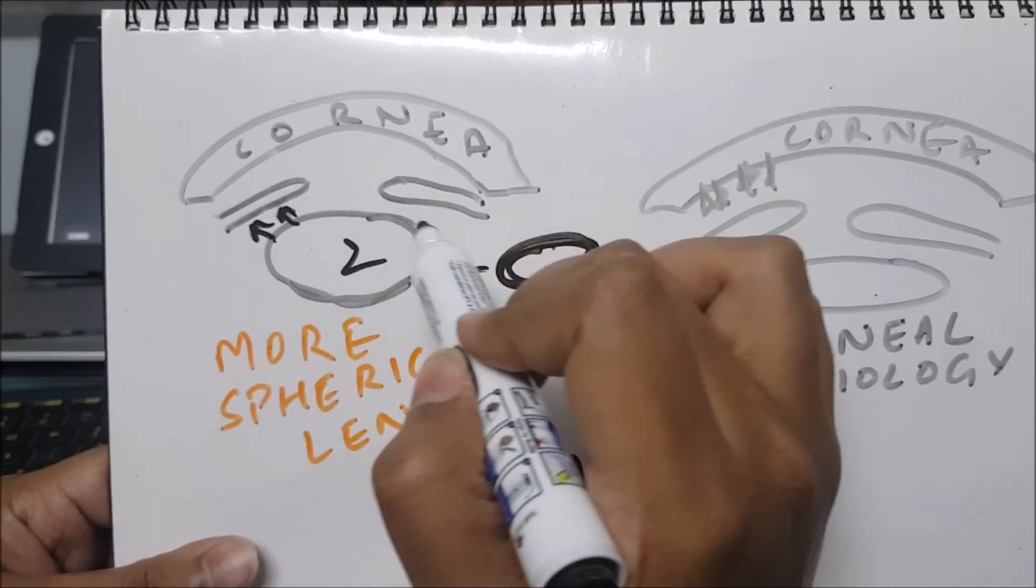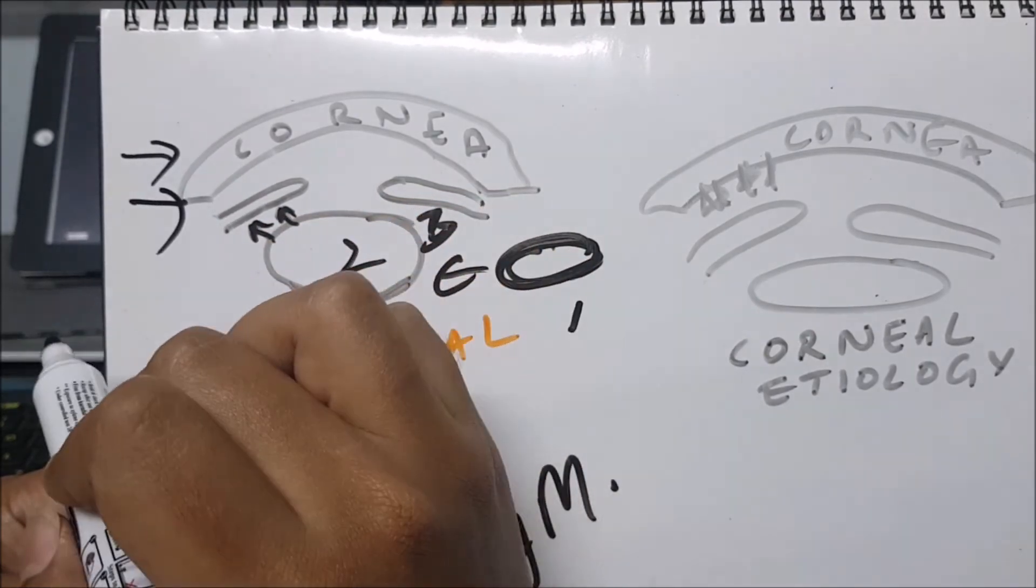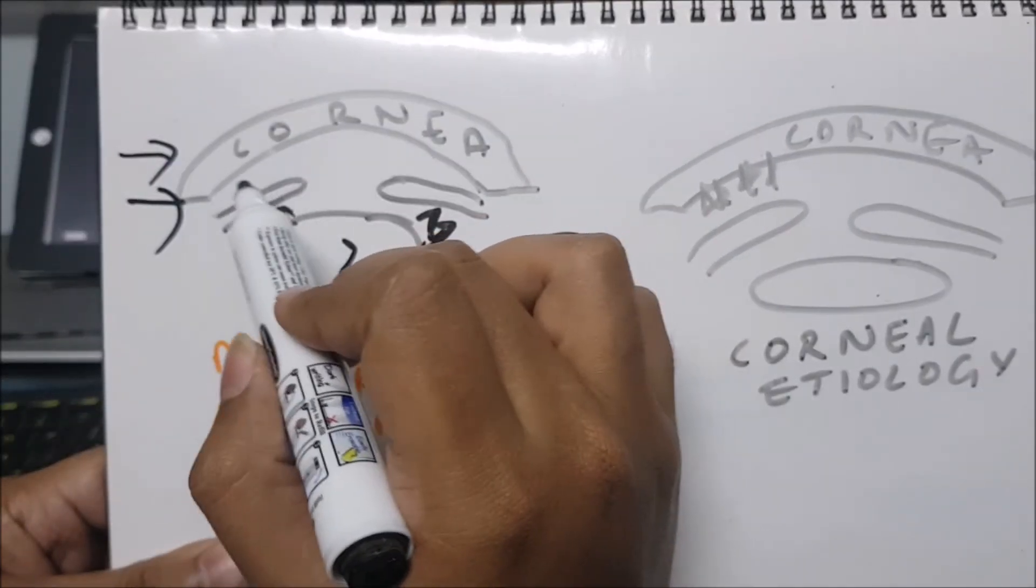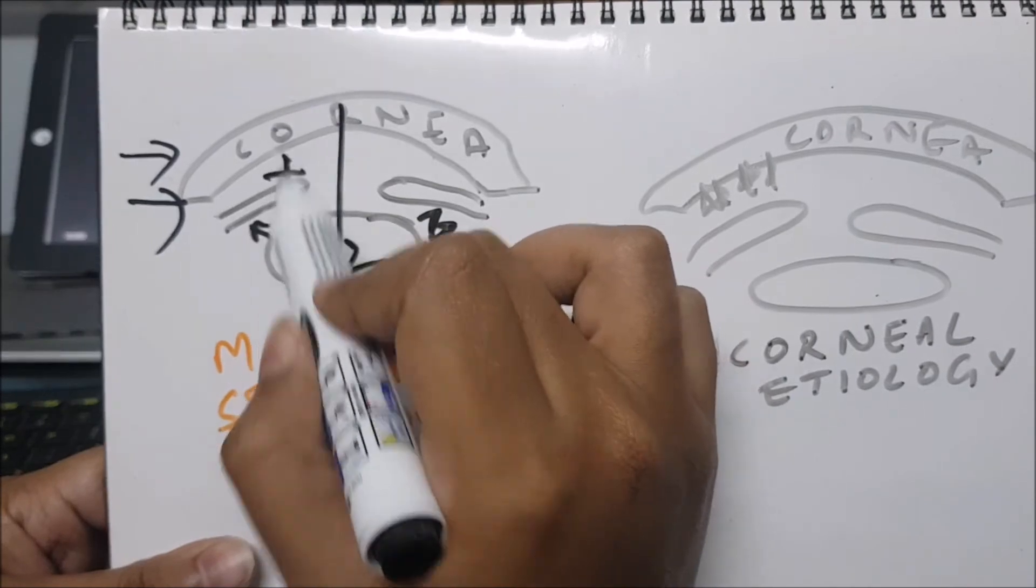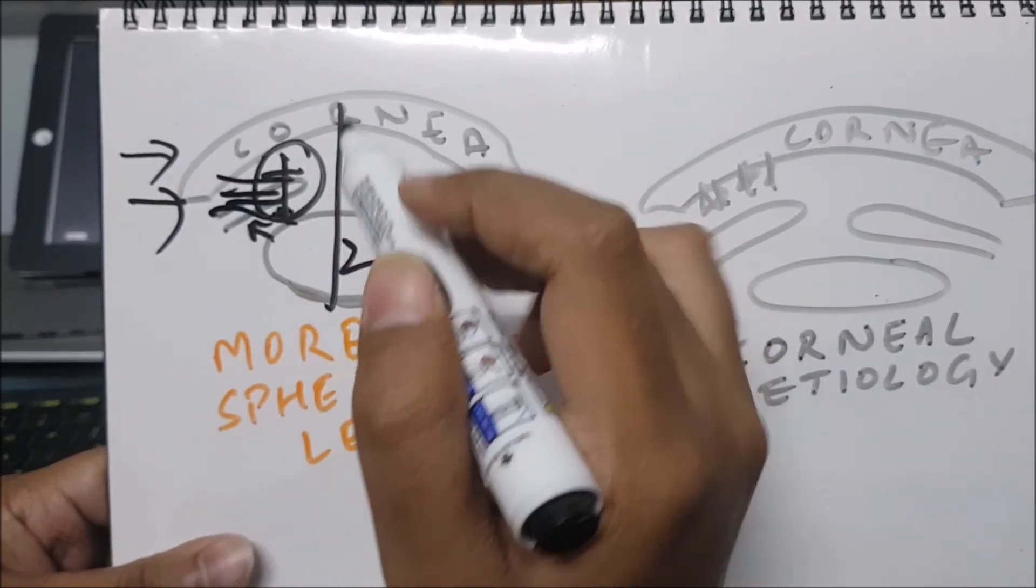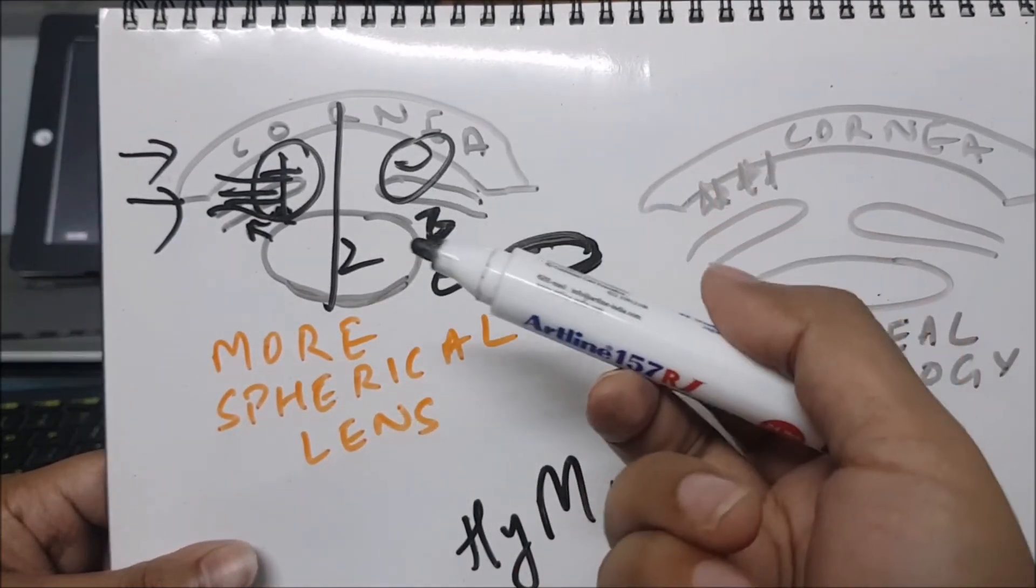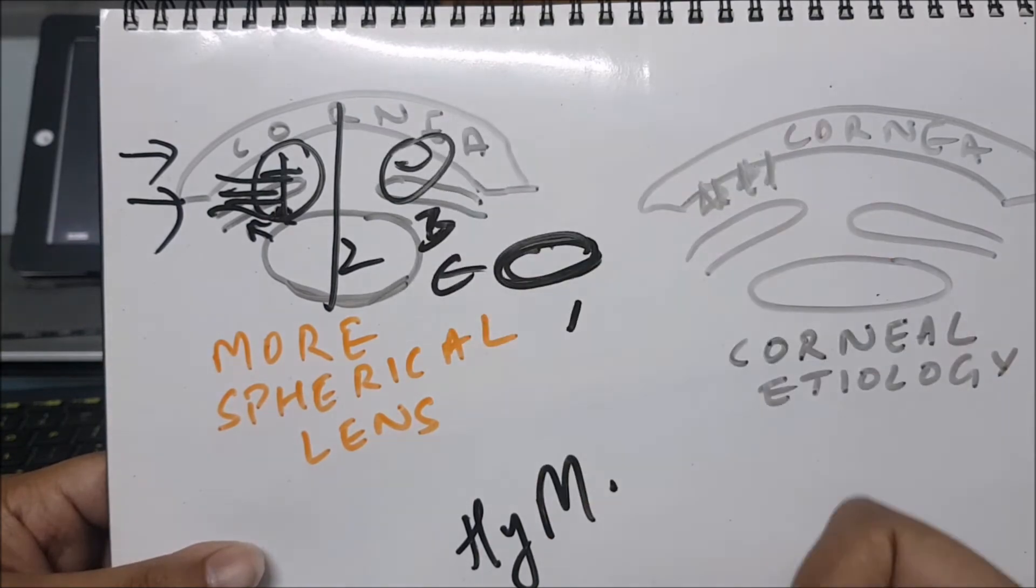From the temporal limbus you shine the torch, and again you get this eclipse sign. Only this side would be positively illuminated because this will obstruct the light. It's as simple as that - negative illumination. In hypermetropia you get shallow anterior chamber.